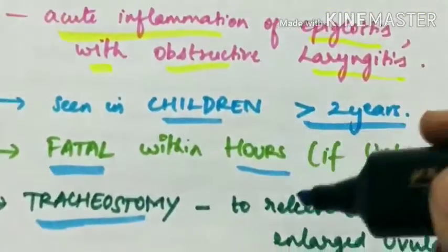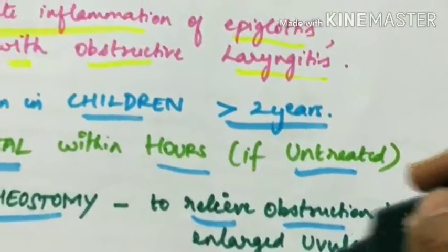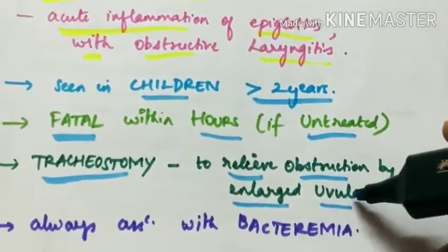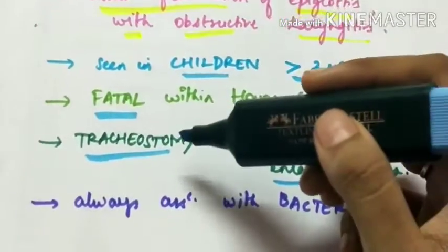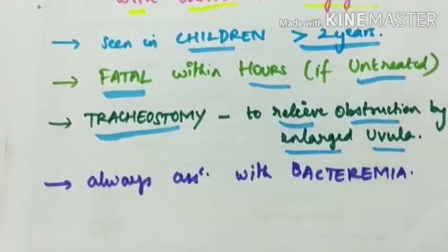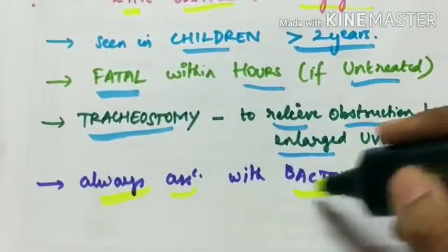And tracheostomy is performed to relieve obstruction by the enlarged uvula. So here the uvula is enlarged leading to the obstruction of the trachea. So tracheostomy is performed. The laryngoepiglottitis is always associated with bacteremia.